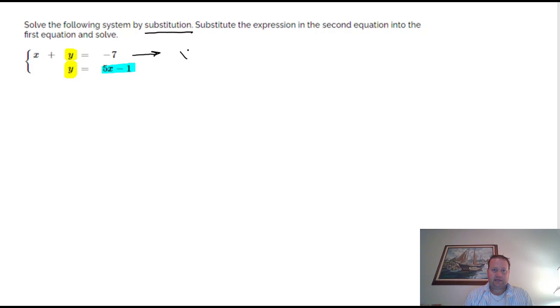So this top equation is really not going to be written as x plus y equals negative 7 again. Now it's going to be x plus, and in place of the y we're going to write 5x minus 1. And then that is all equal of course still to negative 7.